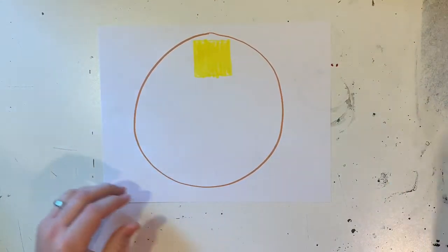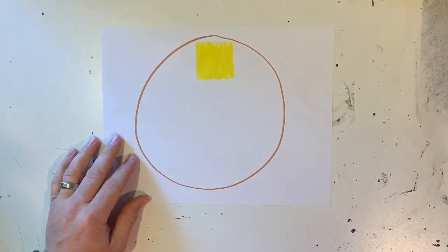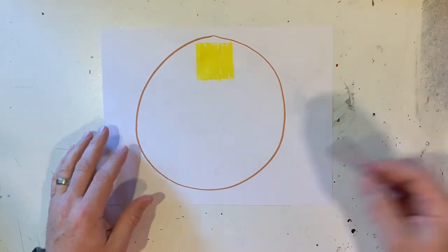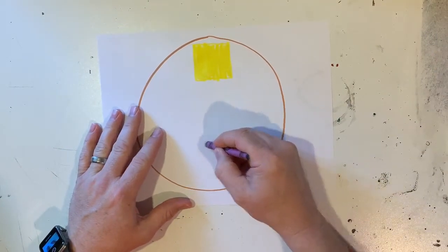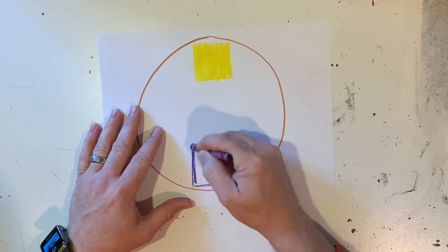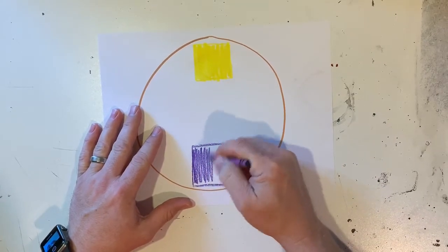Then right across from the yellow, I'm going to use the color purple. I found a purple crayon, so I'm going to draw another square and I'm going to color it in.